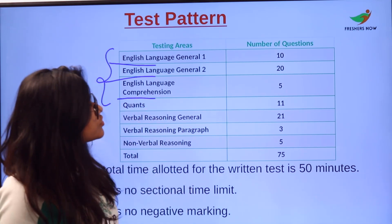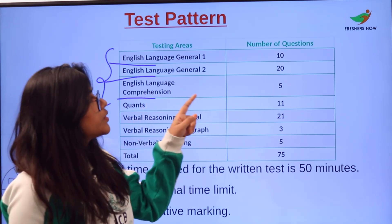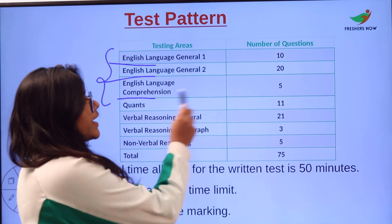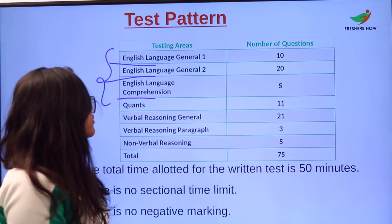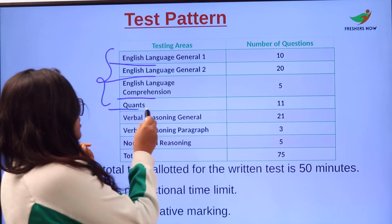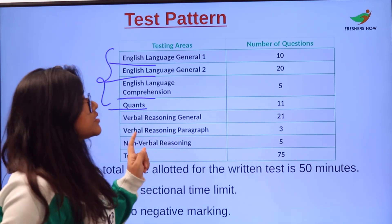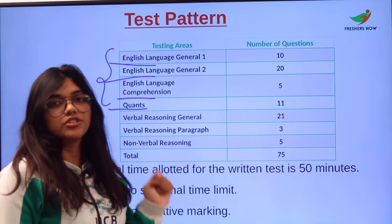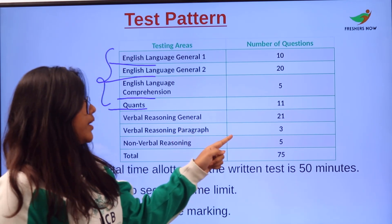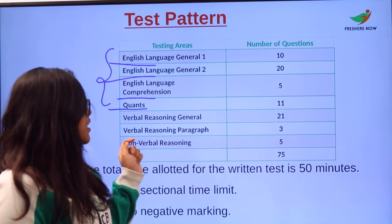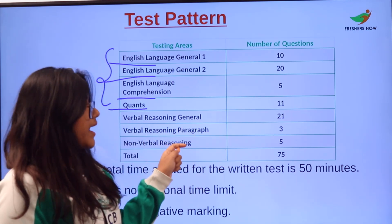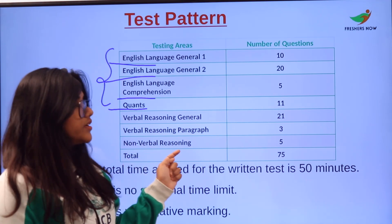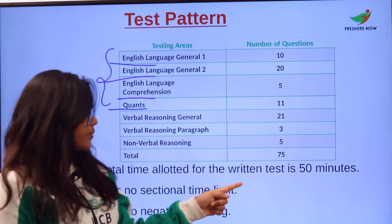In English Language General 1 you will be given 10 questions, General 2 has 20 questions, and Comprehension has 5 questions. Next comes Quants with 11 questions, Verbal Reasoning General with 21 questions, Reasoning in Paragraph with 3 questions, and Non-Verbal Reasoning with 5 questions.